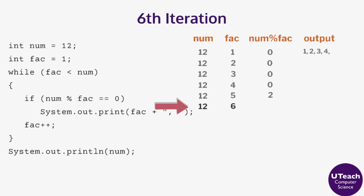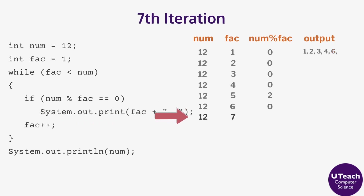For the sixth iteration, fact is less than num so the body of the loop executes. Checking that 12 mod 6 is equal to 0, the output is 6 comma. Fact is incremented to 7. For the seventh iteration, fact is less than num so the body of the loop executes. Since 12 mod 7 is 5, the if statement does not execute and there is no output. Fact is incremented to 8.